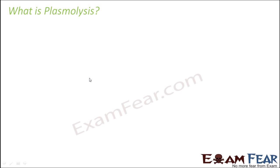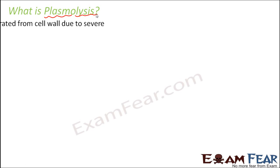The term plasmolysis is derived from 'plasma,' which is something related to the cytoplasm, and 'lysis' means to break down or cut down. Plasmolysis is the process in which the plant cell cytoplasm is separated from the cell wall due to severe water loss.